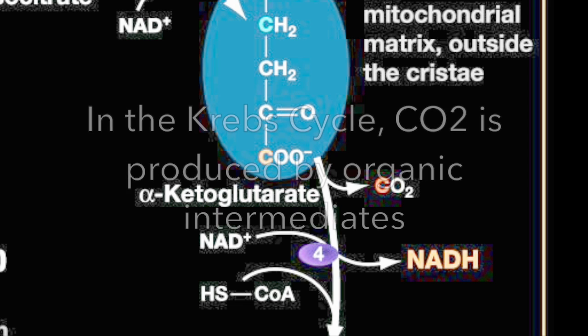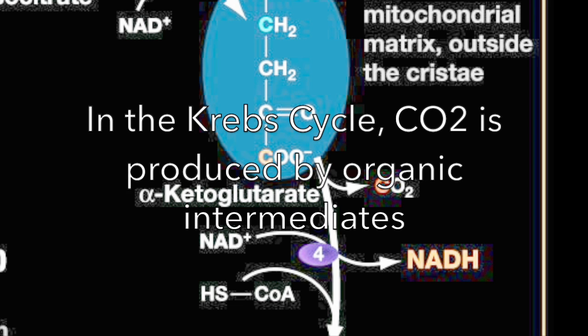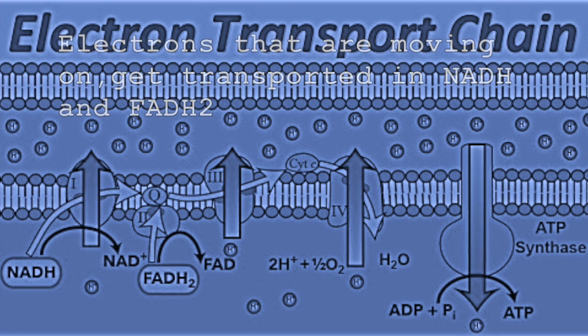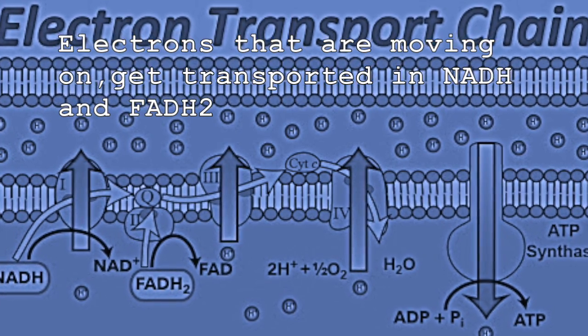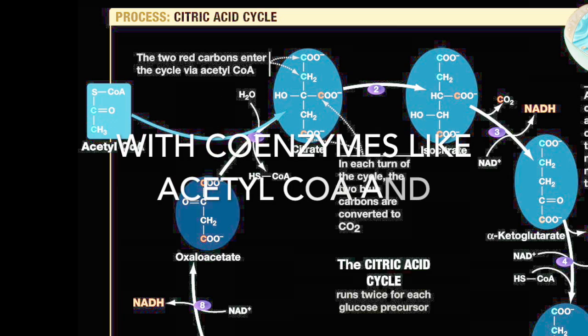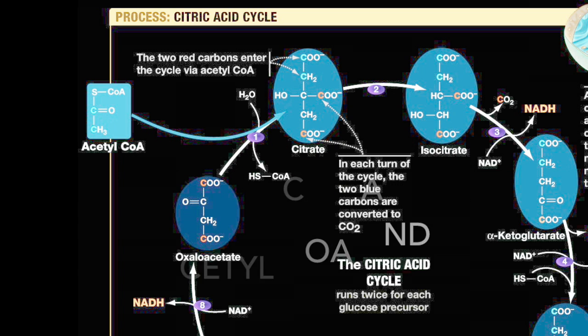In the Krebs cycle, CO2 is produced by organic intermediates through substrate-level phosphorylation. Electrons that are moving on are transported in NADH, FADH2, and coenzymes like acetyl-CoA.